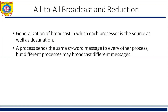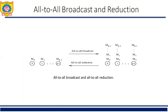All-to-all broadcast is a generalization of one-to-all broadcast in which all P nodes simultaneously initiate a broadcast. A process sends the same M-word message to every other process, but different processes may broadcast different messages. All-to-all broadcast is used in matrix operations including matrix multiplication and matrix-vector multiplication. The dual of all-to-all broadcast is all-to-all reduction, in which every node is the destination of an all-to-one reduction.